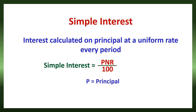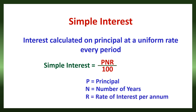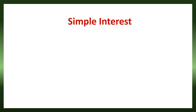P is the principal, N is the number of years, and R is the rate of interest per annum. We can calculate simple interest very easily using this formula PNR divided by 100. In some places, instead of N, they write T, giving P into T into R divided by 100, where T means time. Here, we are using N.